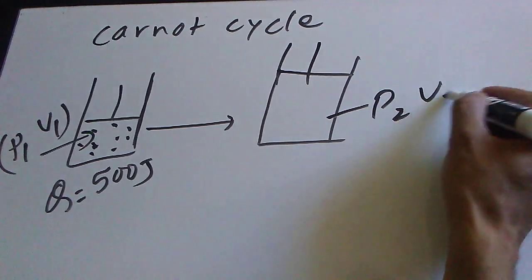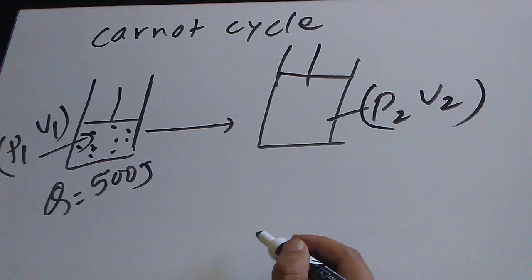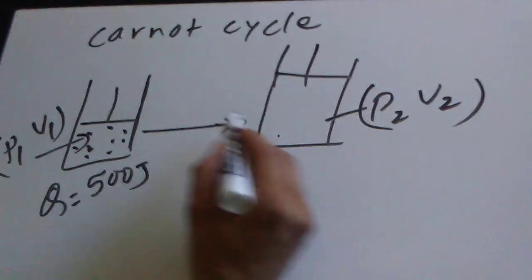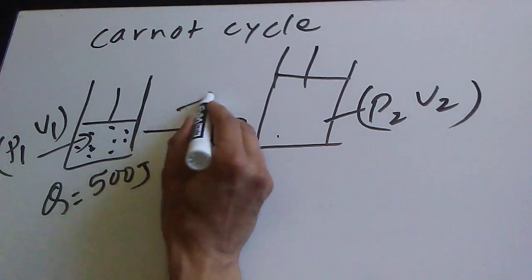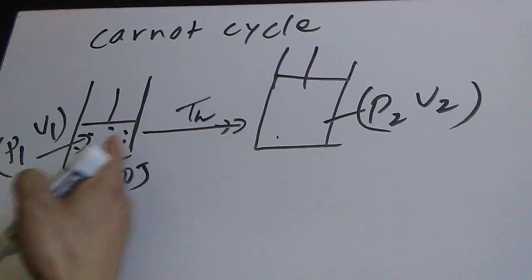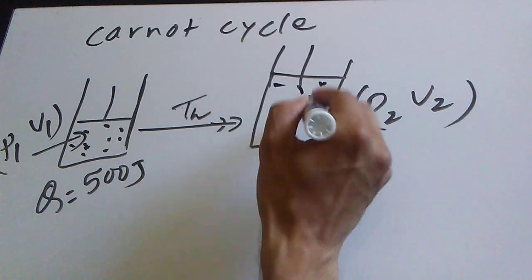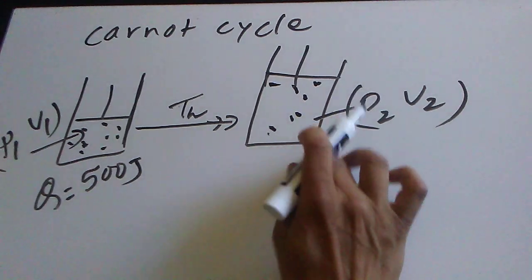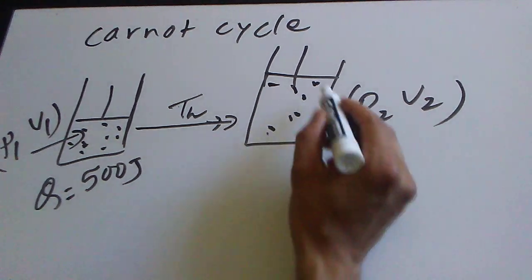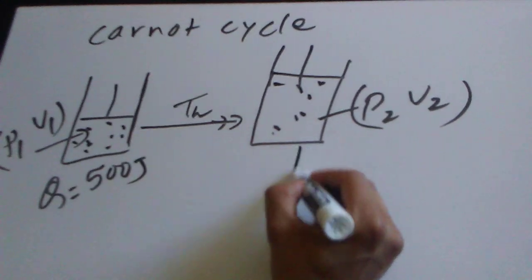The pressure and volume become P2 and V2. The temperature here is high — we call this the high temperature state. This first step is isothermal reversible expansion.